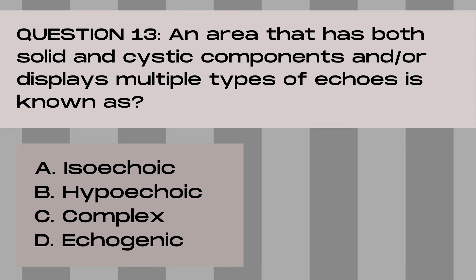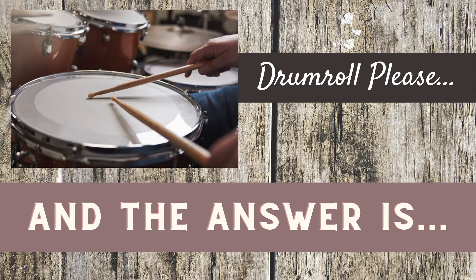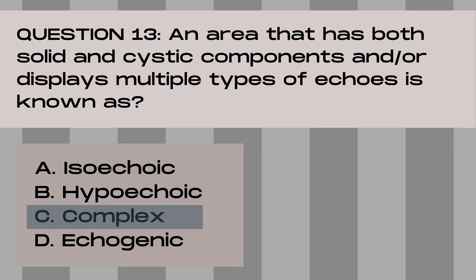Question 13. An area that has both solid and cystic components, and/or displays multiple types of echoes, is known as: A. Isoechoic, B. Hypoechoic, C. Complex, or D. Echogenic. And the answer is C. Complex. A complex area on ultrasound indicates that the area has both solid and cystic components, and multiple echogenicities or levels of brightness are present within the mass. It may have anechoic areas, hypoechoic areas, and various other echogenicities within the mass.